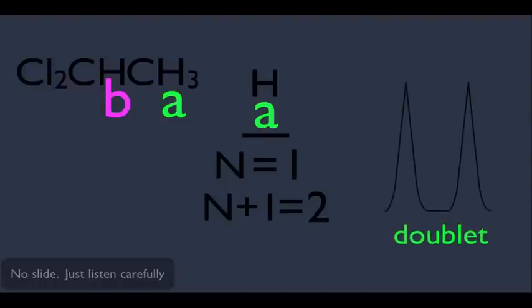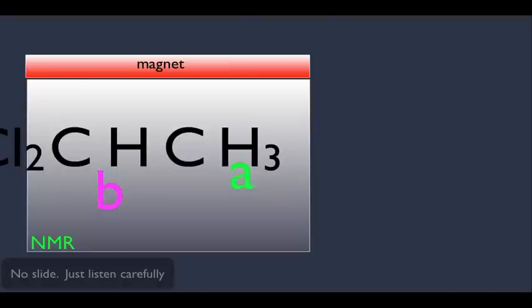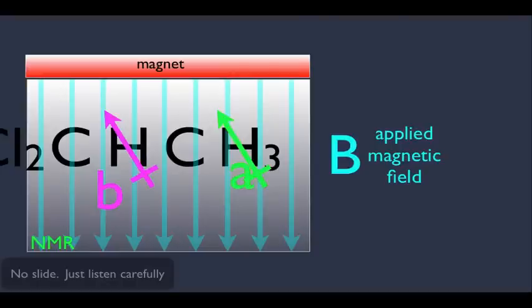But the question is, why a doublet? Let's put our molecule in the H NMR and get a blow-up view, separating things so we can clearly see all the atoms. This is the A hydrogen and this is our B hydrogen. The hydrogen atom can be thought of as a magnet. When we turn on the NMR, the B applied magnetic field is generated. Our formula for shifting is: B effective equals B applied minus B local.